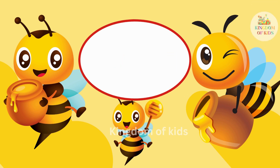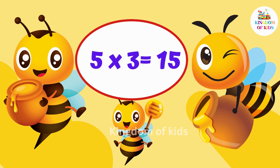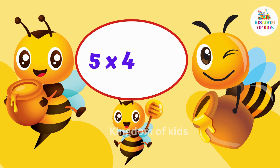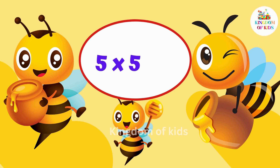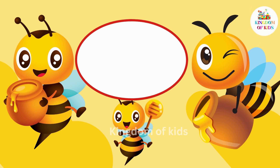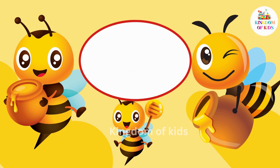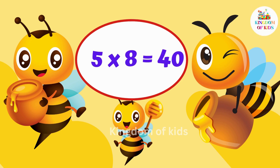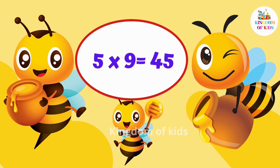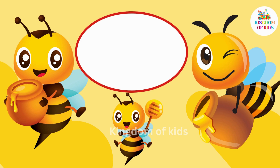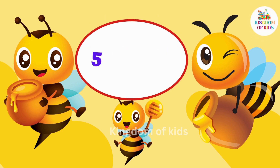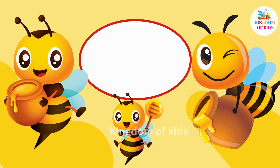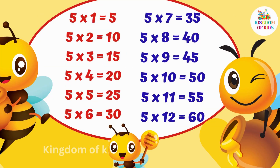Five ones are five. Five twos are ten. Five threes are fifteen. Five fours are twenty. Five fives are twenty-five. Five sixes are thirty. Five sevens are thirty-five. Five eights are forty. Five nines are forty-five. Five tens are fifty. Five elevens are fifty-five. Five twelves are sixty.